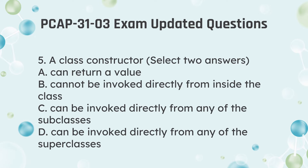Question 5: A class constructor — select two answers. a. Can return a value. b. Cannot be invoked directly from inside the class. c. Can be invoked directly from any of the subclasses. d. Can be invoked directly from any of the superclasses.